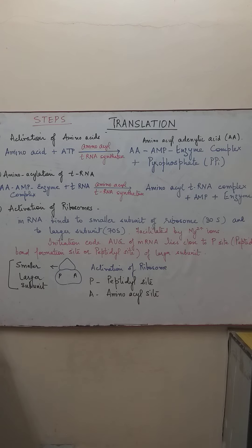What happens? The activation of ribosome is brought about with the help of mRNA. mRNA binds to the smaller subunit of ribosome, that is 30S in case of eukaryotes, and later to larger subunit. This bringing of two subunits of ribosome together is facilitated by the magnesium ions.